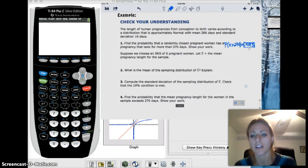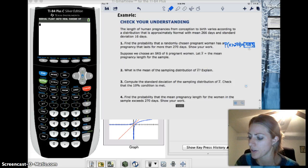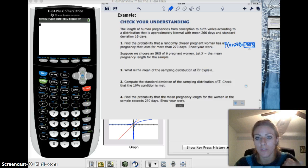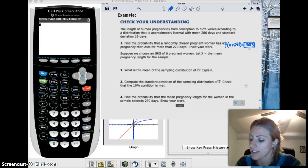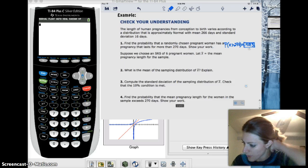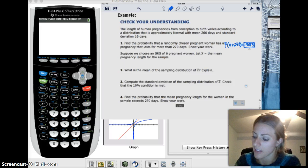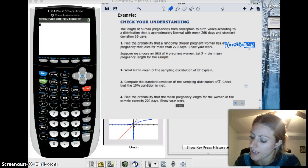Next question. What's the mean? Suppose we choose a simple random sample of six women, so n is six. Let x-bar be the mean pregnancy length for the sample. What's the mean of the sampling distribution x-bar? Well, you got to check your conditions. One, is it approximately normal? Is the population approximately normal? Yes. And is six less than or equal to 10% of your population? 10% of my population is the human race, the female half of it. Yes, this is true. So then we can just say that the mean of the sampling distribution is, in fact, equal to the mean of the population, 266.